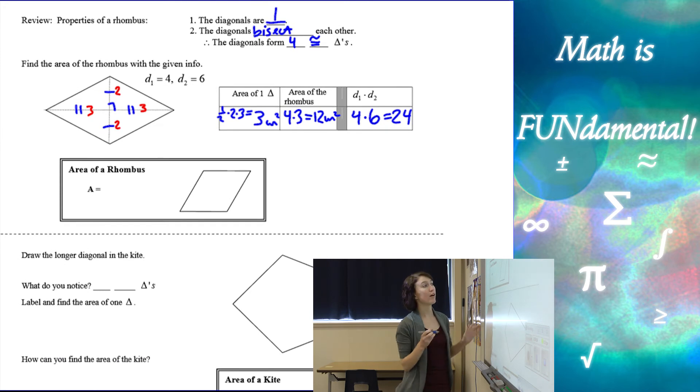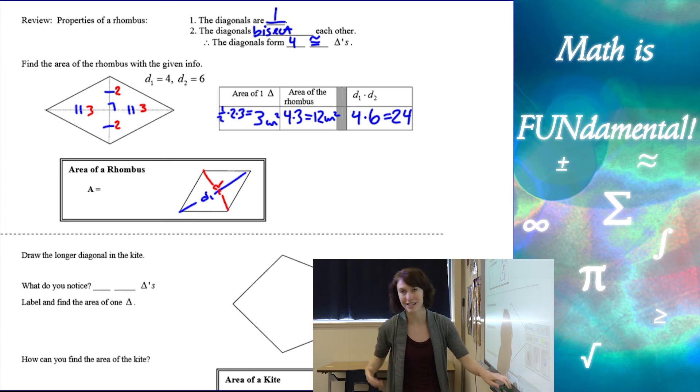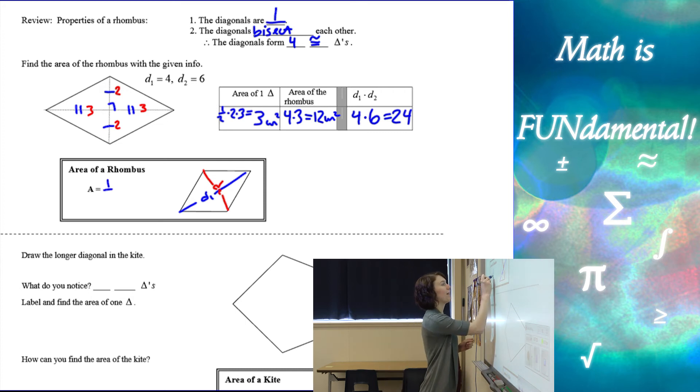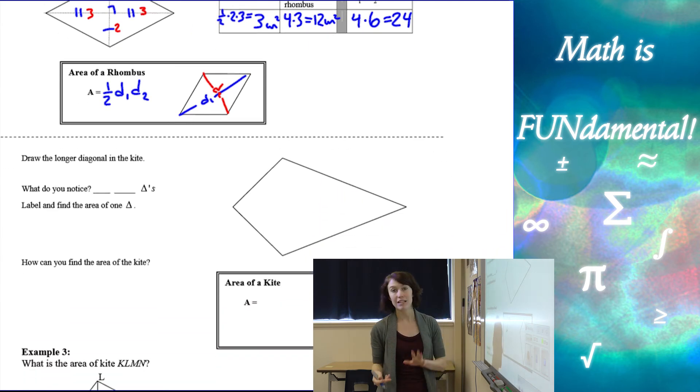So my area of a rhombus, if I want to use my diagonals, D1 and D2, it doesn't matter which one is which, they're just both diagonals, I can take one half of the product, D1 times D2. So nice short little formula if we're given the diagonals of our rhombus.